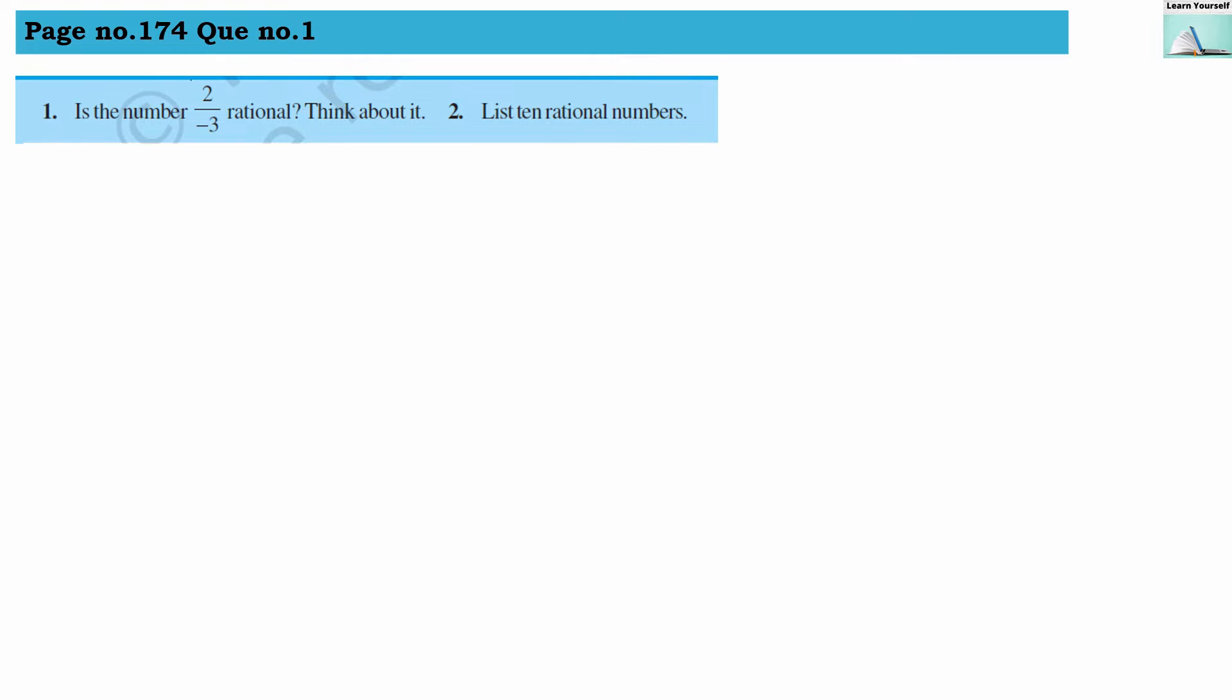Try this sum from page number 174. First question is: the number 2 divided by minus 3, rational? Think about it. So what are the rational numbers? Rational numbers are always in the form of p divided by q where